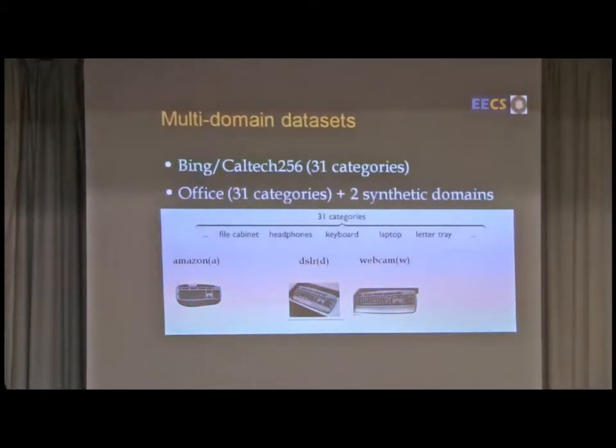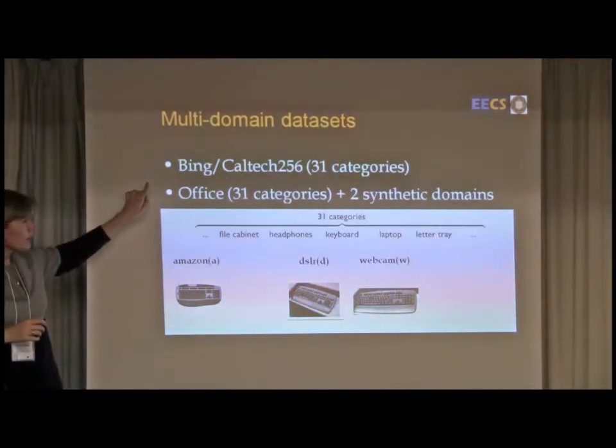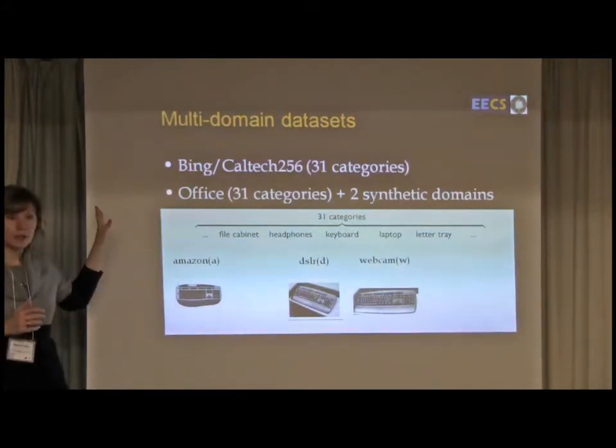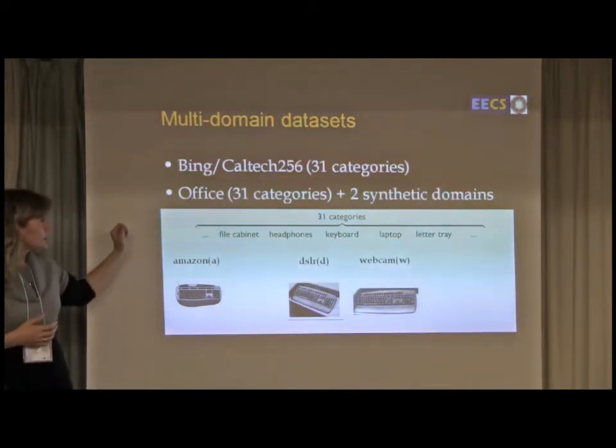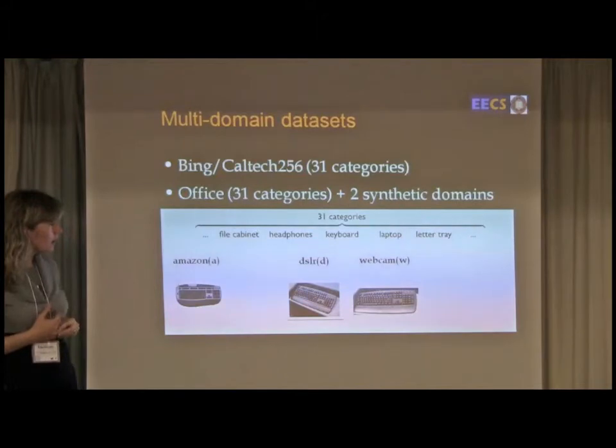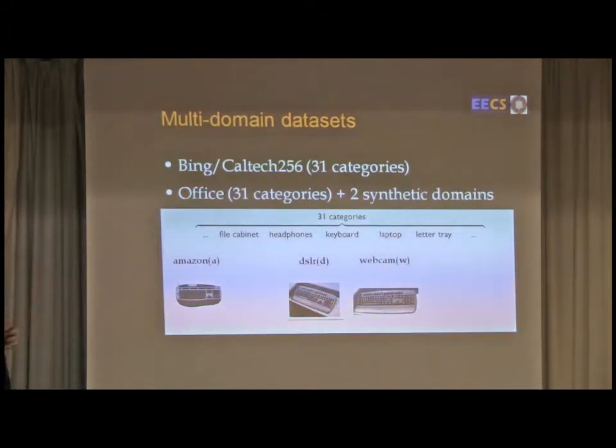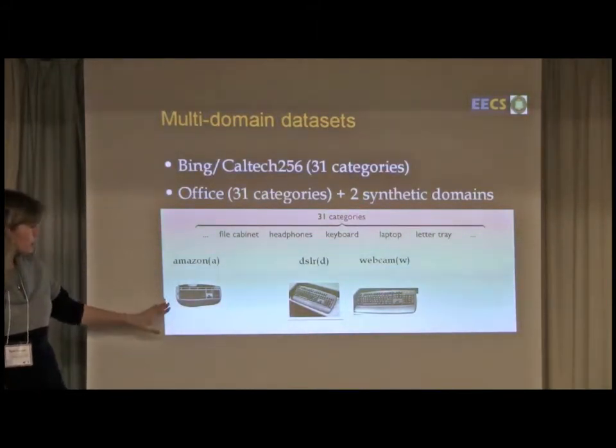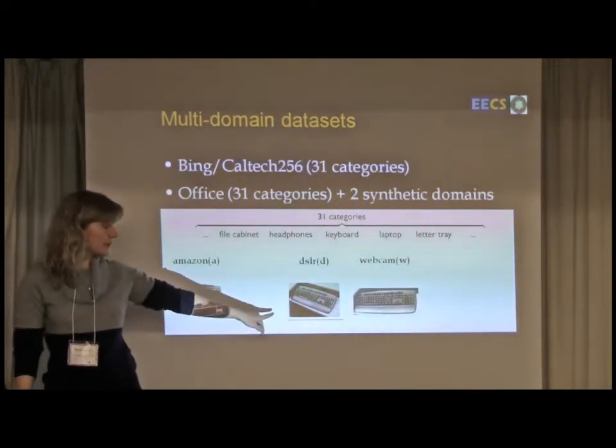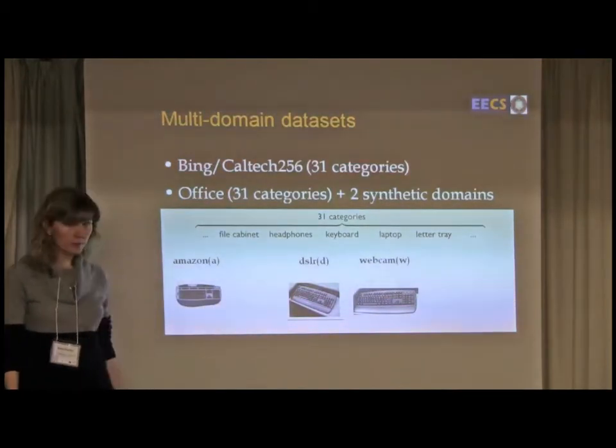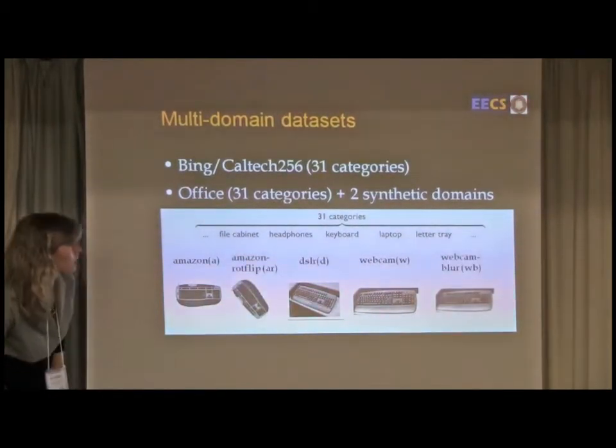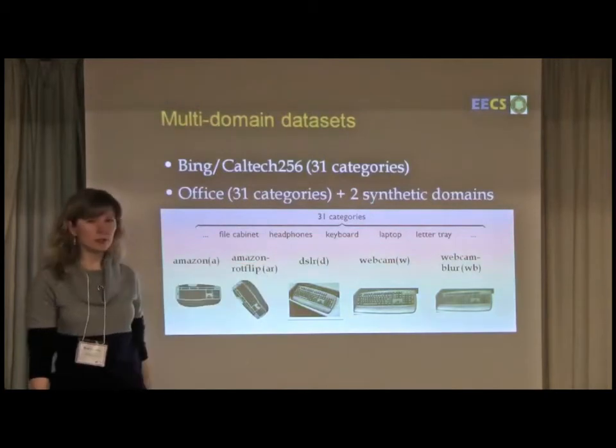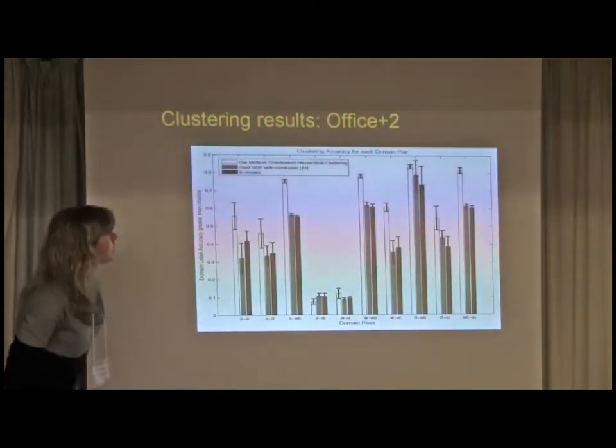On to some experiments. I'm going to show experiments with the Bing and Caltech 256 dataset that I was showing earlier. All these datasets are available, so if any of you are interested, please talk to me. And then we're going to use another dataset called Office dataset, which has 31 categories of common objects that we could find in office. The three domains in that Office dataset are Amazon domain, DSLR camera images, and webcam images. And then we're also going to add two synthetic domains where we took the Amazon images and rotate them and flip them, and we took the webcam images and flip them.